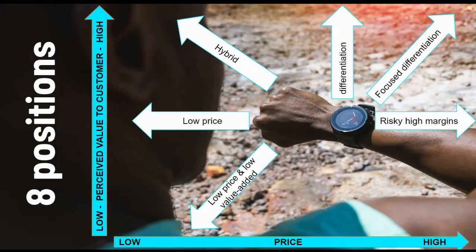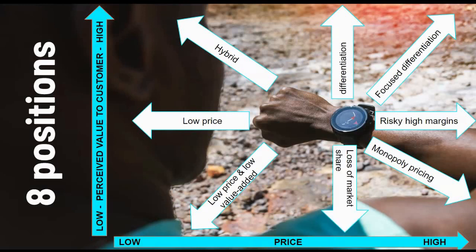Then we move to risky high margins — we normally refer to gross profit and net profit margins. It's very risky, high-priced items, normally in niche markets. Then monopoly pricing. If you don't know what monopoly means — it's not the board game. In economics, a monopoly is a single seller, but in law, a monopoly is a business entity that has significant market power — the power to charge overly high prices — and they normally get away with it because there's no alternative. The last of the eight is loss of market share.